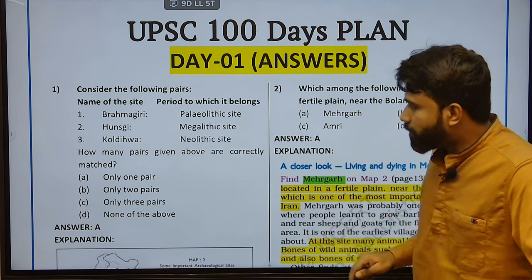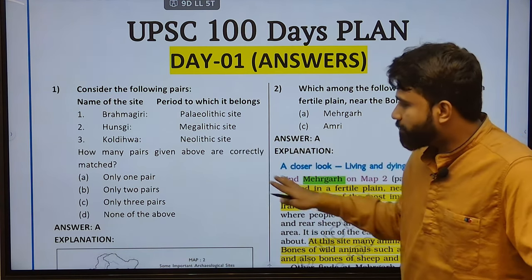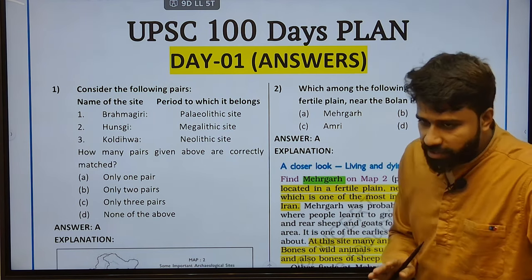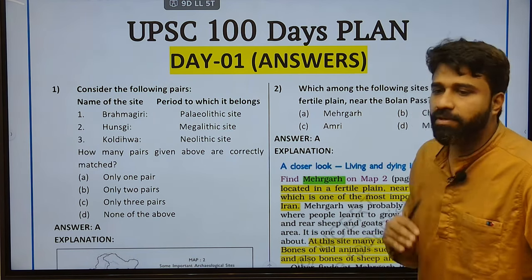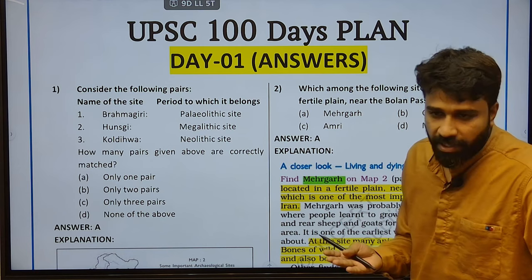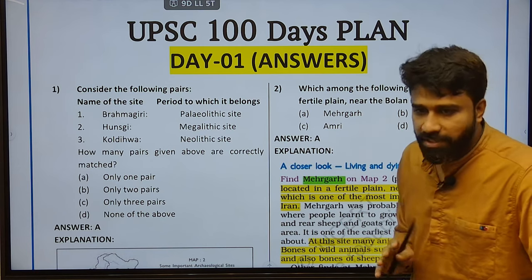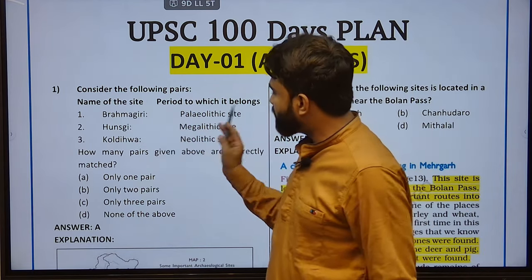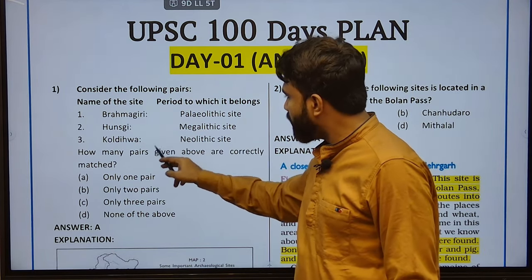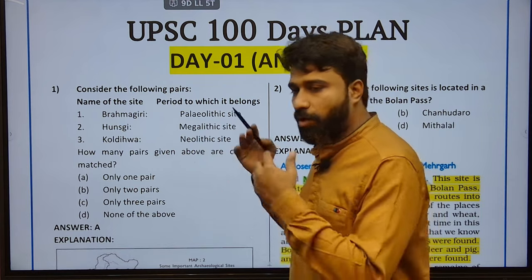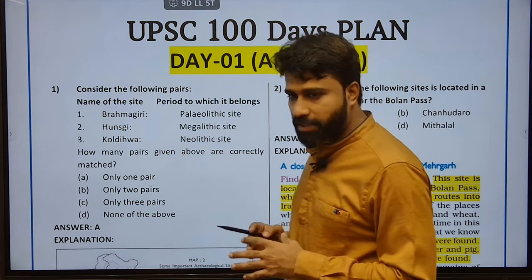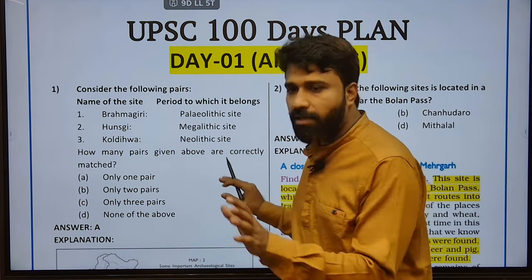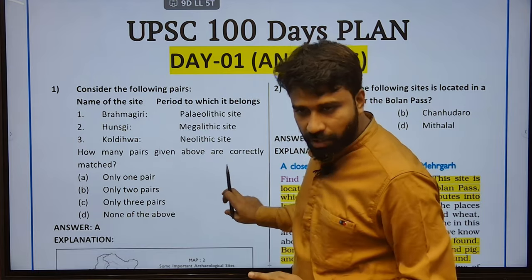Coming to the first MCQ, it is talking about matching and the without-elimination technique. You need to go through the various fundamentals of the prehistoric period and also the Indus Valley civilization. Coming to the first statement, it is talking about Bramagiri, Khansgi, Kolnikwa — which of the following, how many of the above sites are correctly matched? You need to know how many of them are related to Paleolithic, Mesolithic, and Neolithic sites.